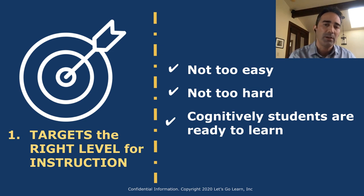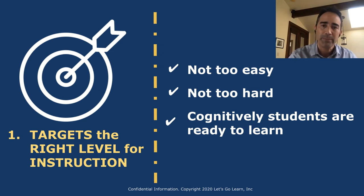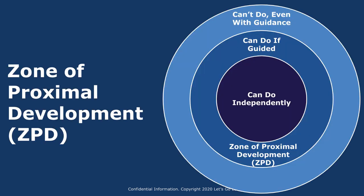We want to know where to teach students so that when we do work with them it's not too hard, it's not too easy — it's just at the right level. We call this finding the zone of proximal development, which means students can work independently. If it's too hard they need some help, or if it's really hard they just can't do it because it's beyond their grasp.